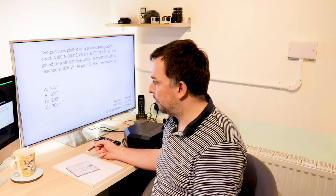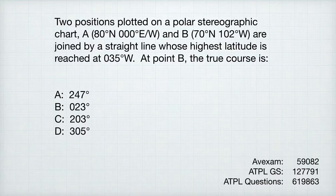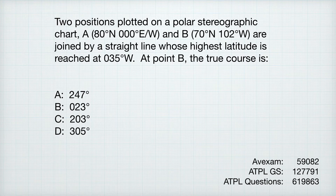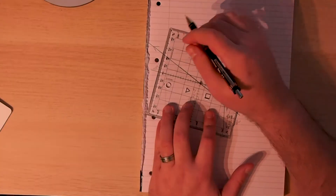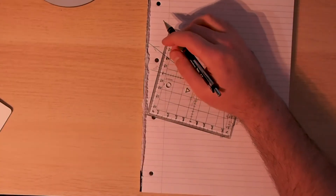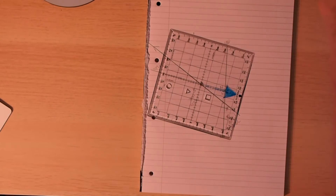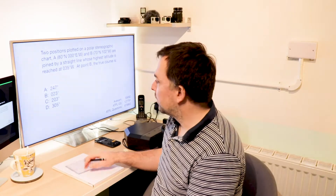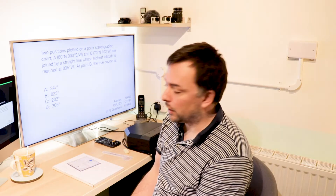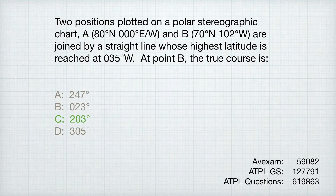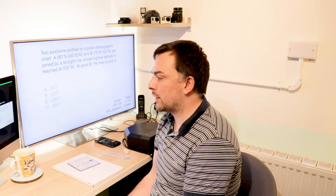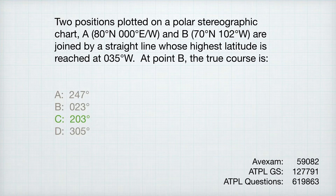Label the line if you have to, but it's not 023. Is it 203? Mine looks like 202, so I'm going to say it's 203. Is it 305? No. So for this one, I'm going option C: 203. On AVEXAM that's number 59082, on ATPL-GS it's 127791, and on ATPL Questions it's 619863.